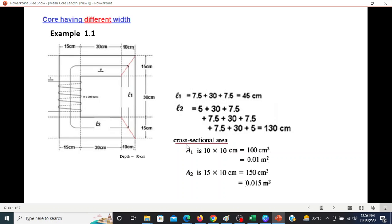Now the area of cross section. Depth is 10 cm. So in the first case A1, the width is 10, so it is 10 multiplied by 10 is 100 cm square, and divided by 10,000 it will be 0.01 meters square. Similarly, the area of cross section here will be width 15 cm multiplied by depth 10 cm, so 150 cm square, and divided by 10,000 it will be in meters.